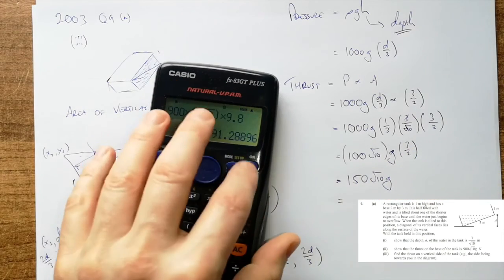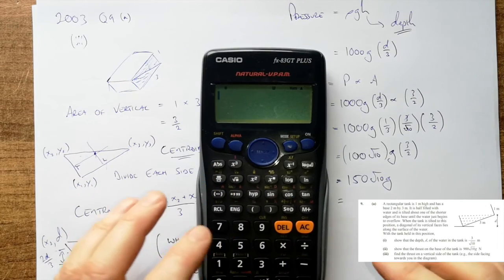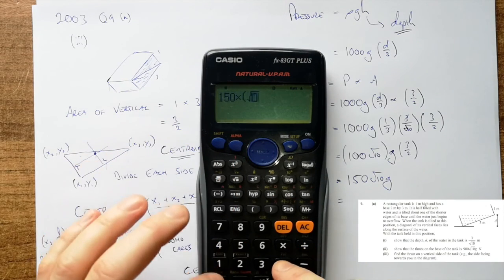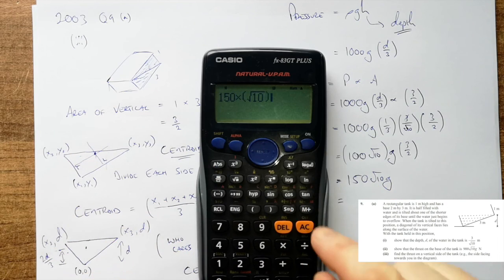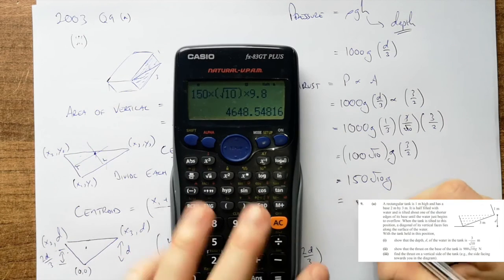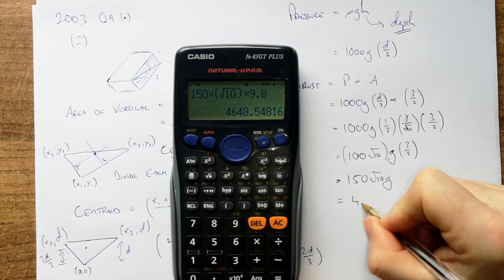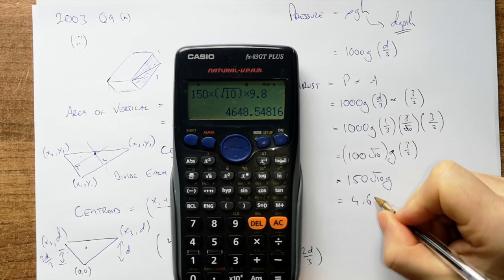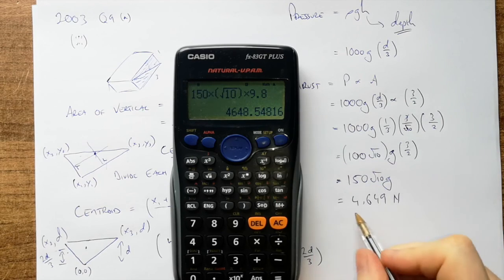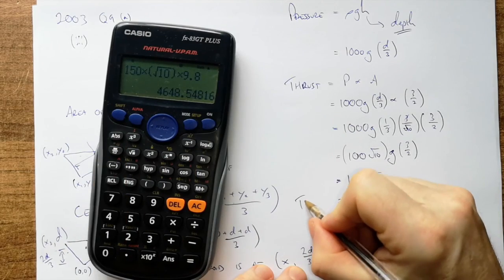150 by root 10 by 9.8, and we are going to get 4649 newtons, just rounding up to the nearest newton. So that is our thrust, 4649 newtons.